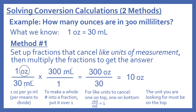There is one ounce per 30 milliliters — since per means to divide, set that as a fraction: one ounce over 30 milliliters. Multiply that by 300 milliliters over one — remember, to make a whole number into a fraction, put it over one. For like units to cancel, we need one on the top and one on the bottom. Milliliters appear on top in the second fraction and on the bottom in the first, so they cancel, leaving us with ounces. Doing the math: 300 divided by 30 equals 10 ounces.